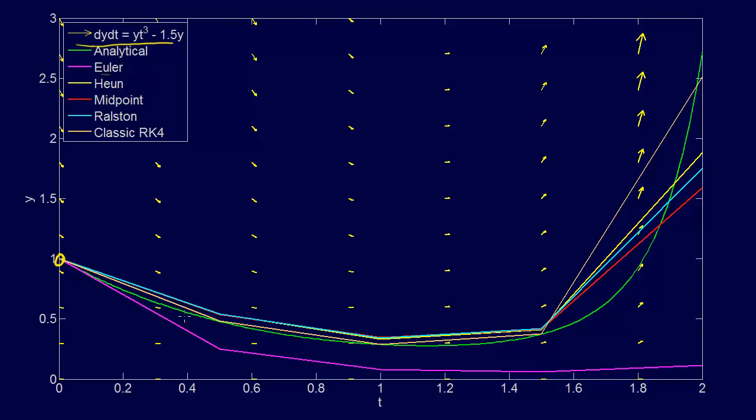Heun's method is this yellow one, and really, I think we can look at Heun's method, all three of these, Heun's, Ralston, and midpoint,